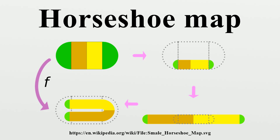First, the square is contracted along the vertical direction by a factor of less than one-half. The caps are contracted so as to remain semi-discs attached to the resulting rectangle. Contracting by a factor smaller than one-half assures that there will be a gap between the branches of the horseshoe.